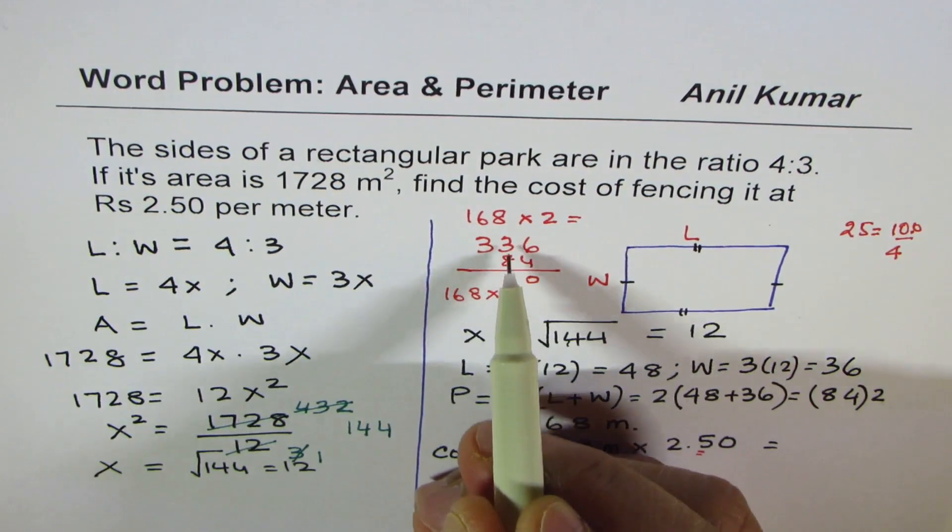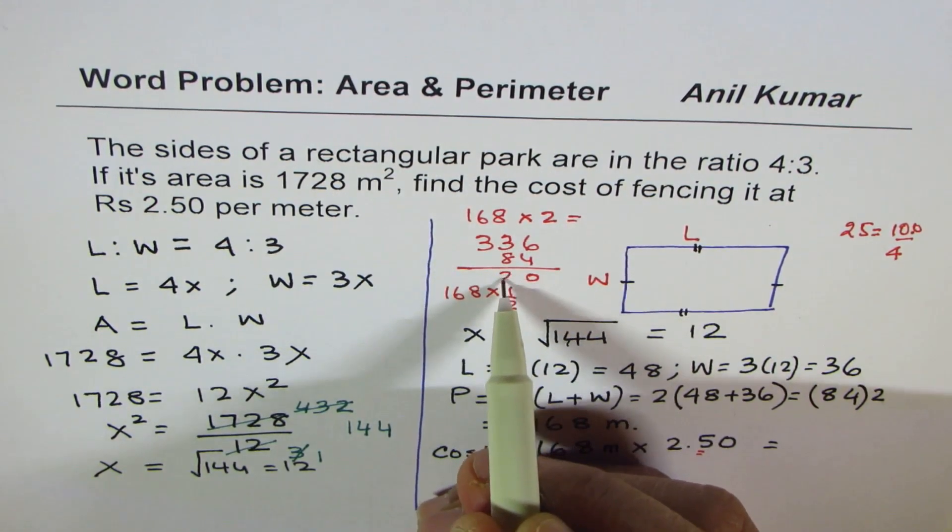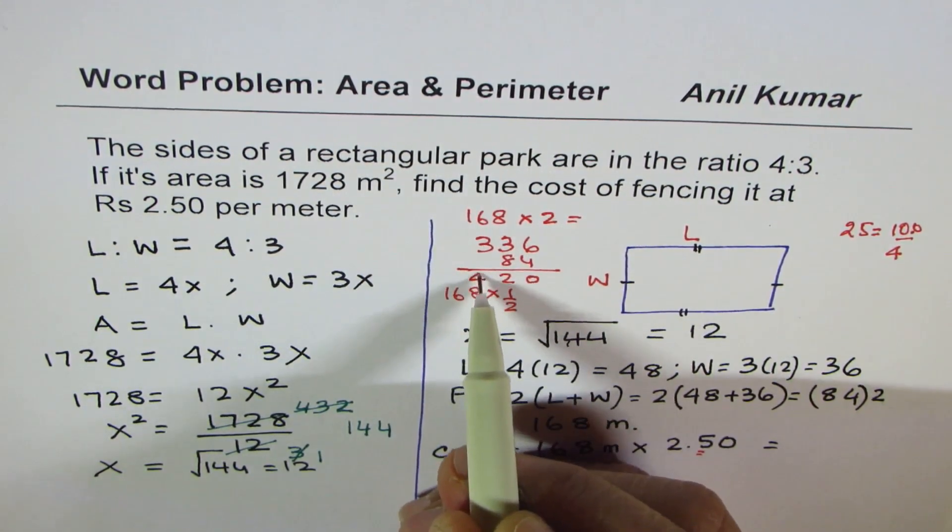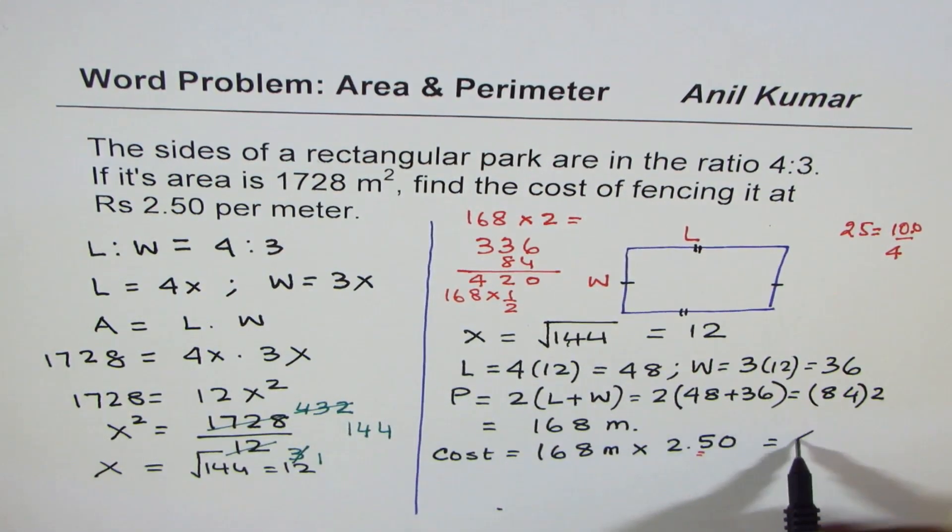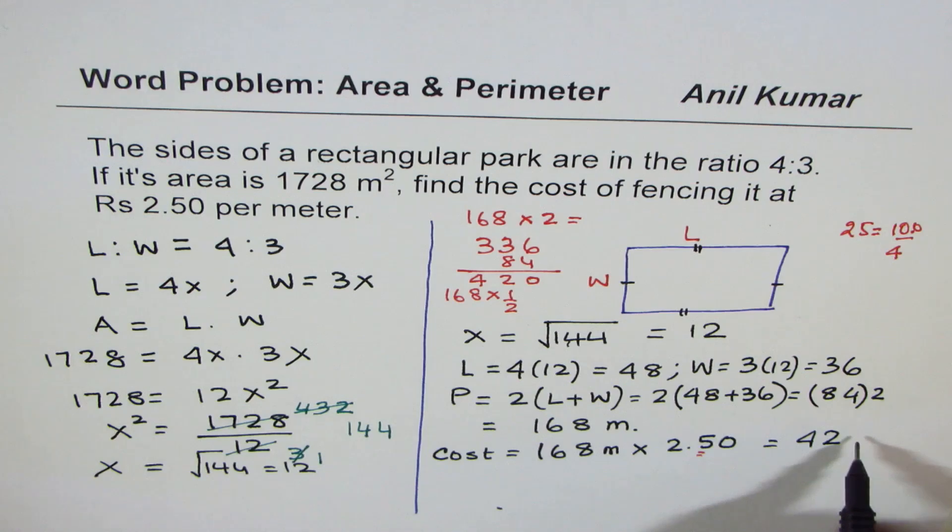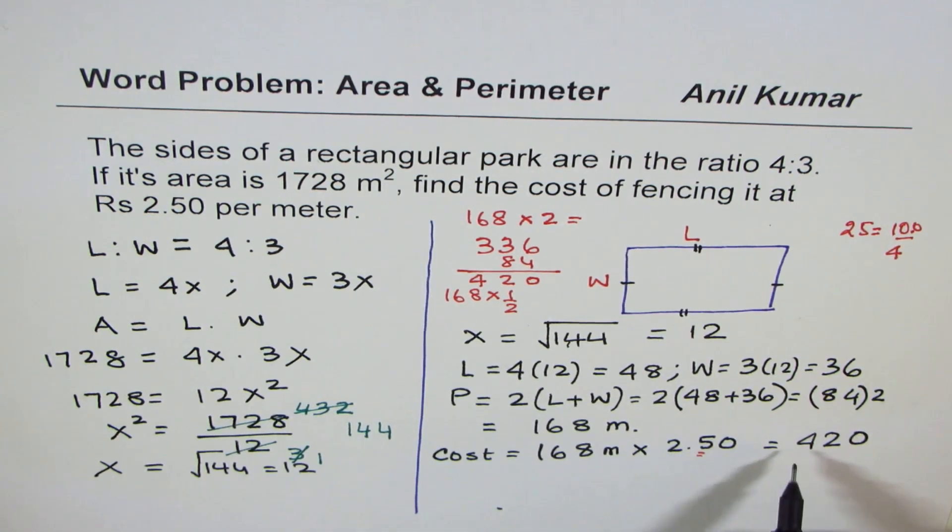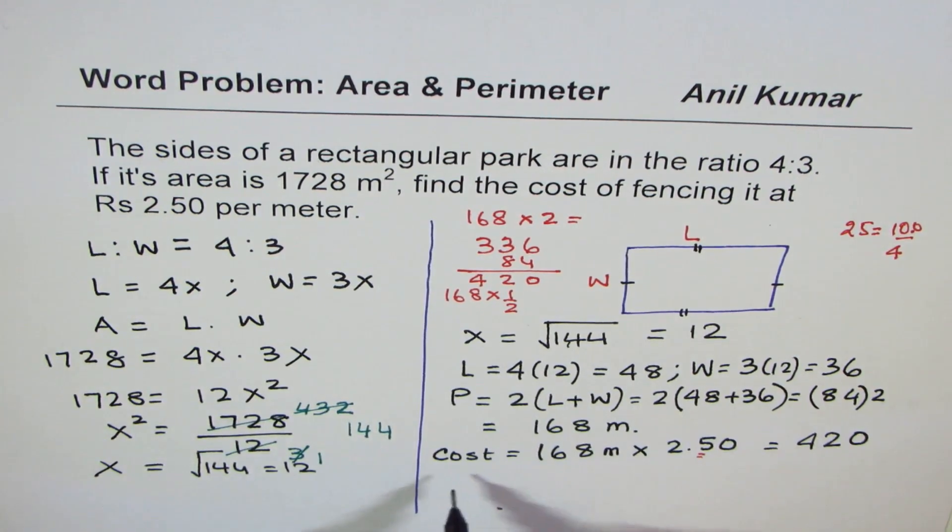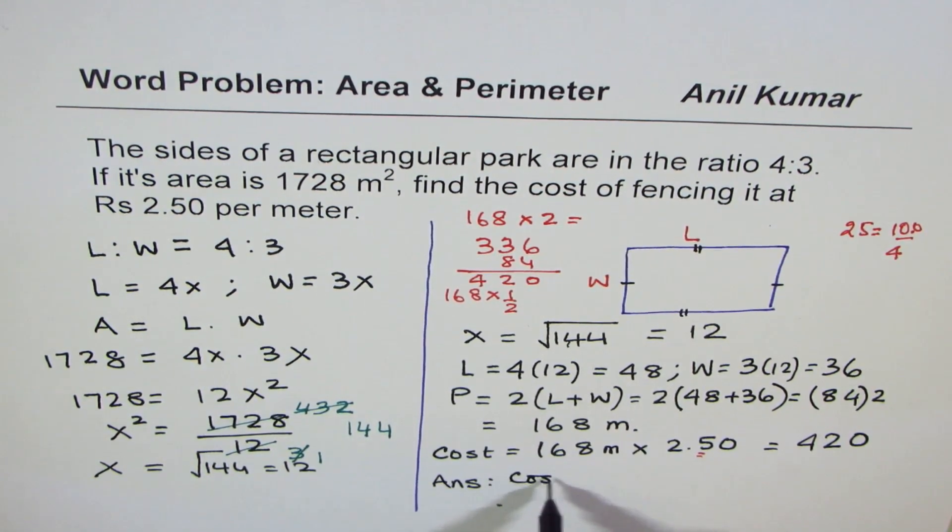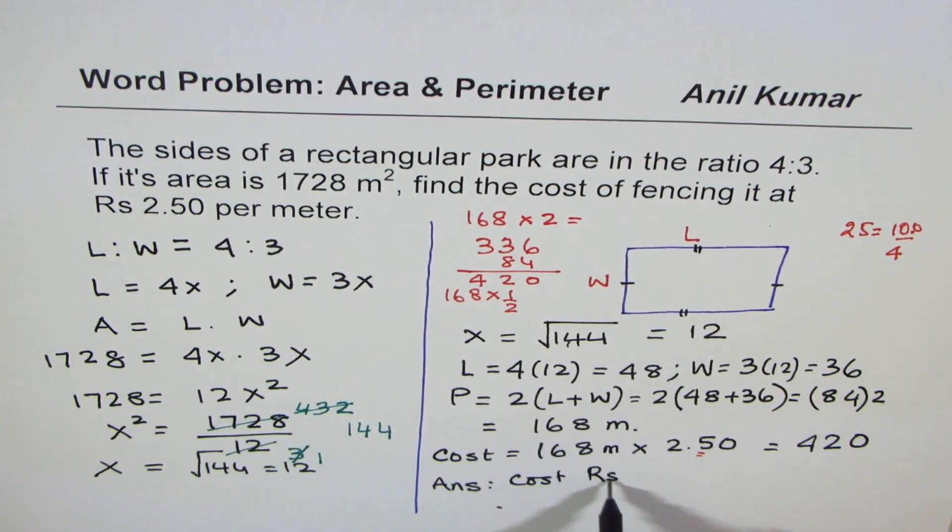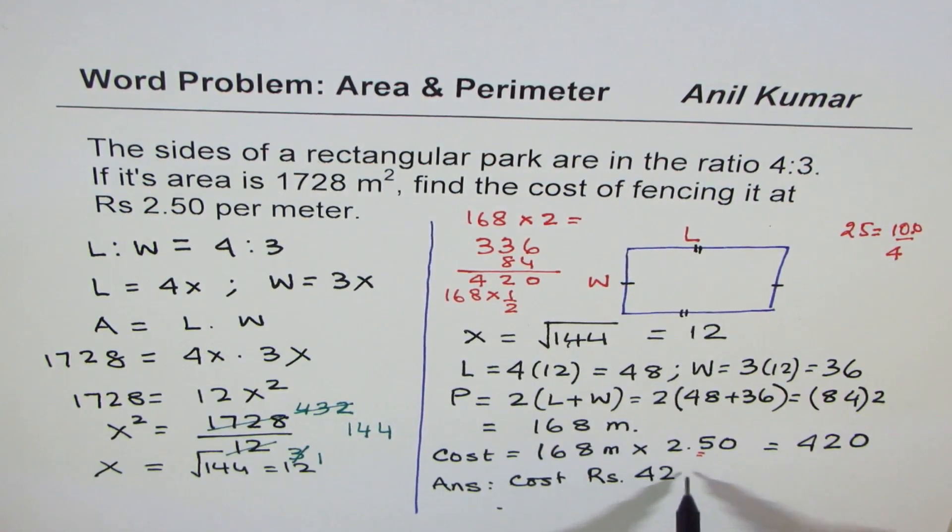6 plus 4, 10, 1. 4 plus 8, 12, 1. We get 4, 20. So 2 and a half times is 420. And therefore, our answer is cost is rupees 420.